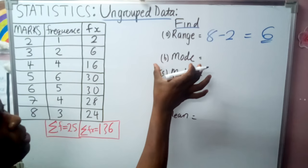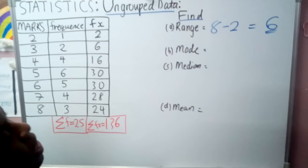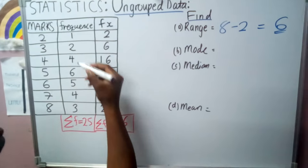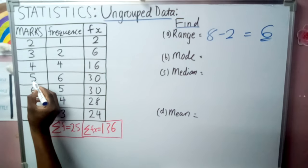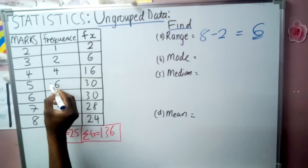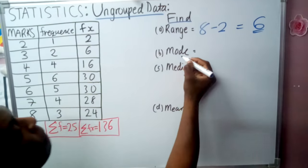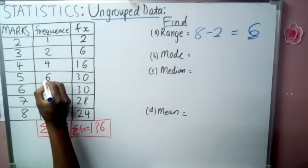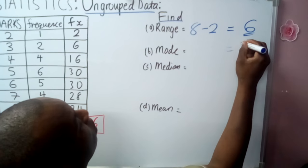B, mode. Mode is the data which is repeating the most times. Now, which data is repeating the most times? Data 5. 5 is repeating 6 times. Mode will be 5 because it is repeating 6 times. So our mode is 5.